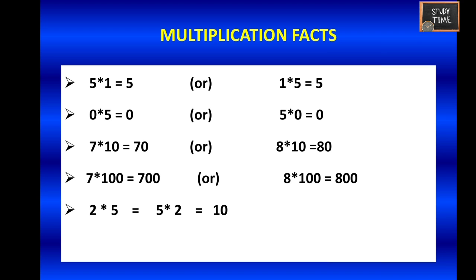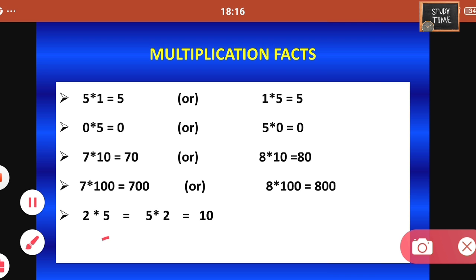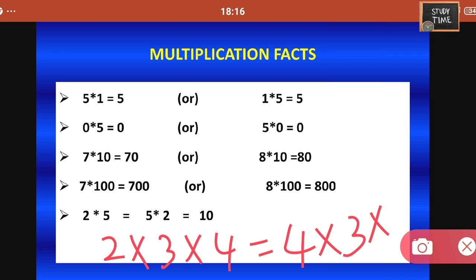Irrespective of the order of multiplication, you will get the same product. For example, 2 into 5 or 5 into 2 equals 10. Similarly, 2 into 3 into 4 equals 4 into 3 into 2 — whatever order you multiply, you will get the same answer.